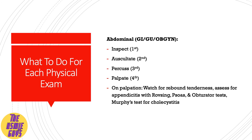For the abdomen — whether it's GU, GI, or OBGYN — you stick to the exact same abdominal exam. This is the only time the order really matters, because if you palpate first you'll ruin the auscultatory and percussion findings. So start with inspection, then auscultate, then percuss, then palpate last. On palpation, watch for rebound tenderness, assess for appendicitis with the Rovsing, psoas, and obturator tests, and check Murphy's test for cholecystitis. Once the patient sits up, do a quick check for costovertebral angle tenderness by gently tapping on both sides of the flank.